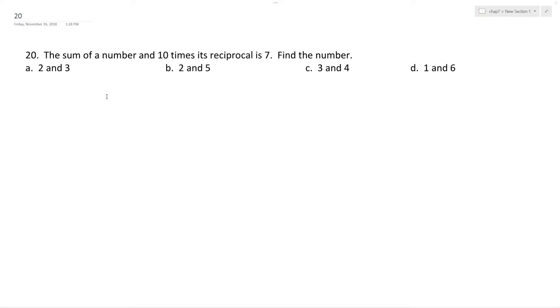All right, so we want to find the sum of a number and 10 times its reciprocal is 7. So essentially that's going to be x plus 10 times 1 over x equals 7.